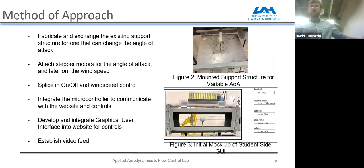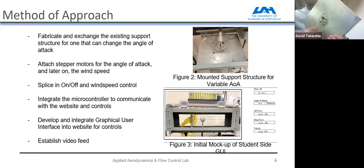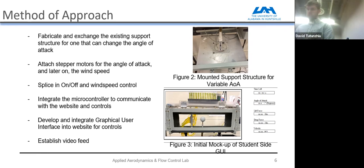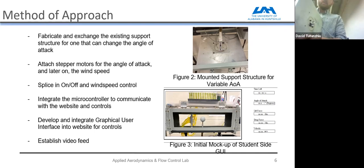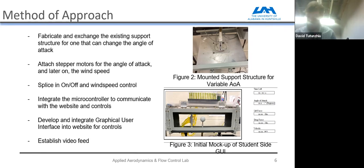Our approach was to initially fabricate and exchange the existing support structure for one that can change the angle of attack. We're using a support plate where you can change the angle of attack of a beam inserted into the hole. By changing that angle, you impose different aerodynamic forces. To do this, we attach stepper motors to the back that can change it to an accurate angle. Later we're going to change the wind speed using a stepper motor or servo, and splice in some wires for on/off control in the control box to keep it simpler.